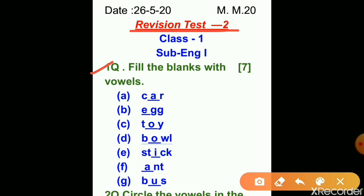So seven parts are here. In part A: C-A-R, car — here vowel A is filled. In part B: E-G-G, egg — here vowel E is filled. In part C: T-O-Y, toy — here vowel O is filled.